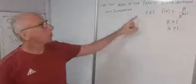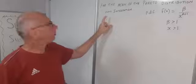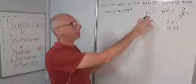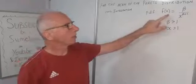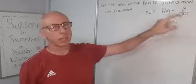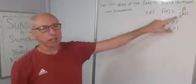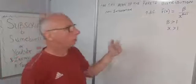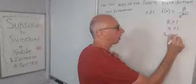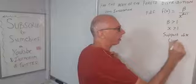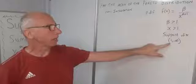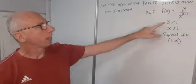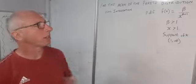We have a question here: we need to find the mean of the Pareto distribution, and we are going to find the mean by way of integration. The Pareto distribution has a PDF (probability density function) given as f(x) = β divided by x to the power of β plus 1. The random variable x is greater than 1, so the support of x is 1 to infinity. Beta is also greater than 1.